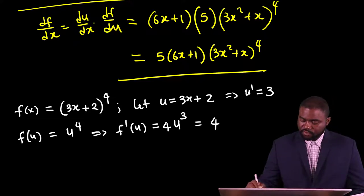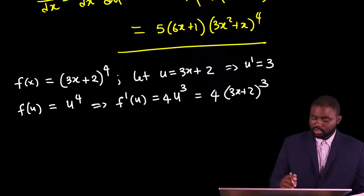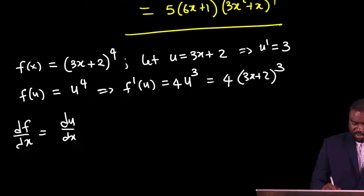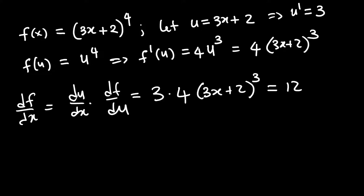This is the same as 4(3x + 2) raised to the power of 3. By the chain rule, df/dx is equal to du/dx dot df/du, which is equal to 3 multiplied by 4(3x + 2)³. This is just 12(3x + 2) raised to the power of 3. This is our answer.